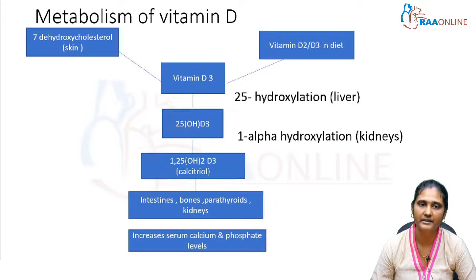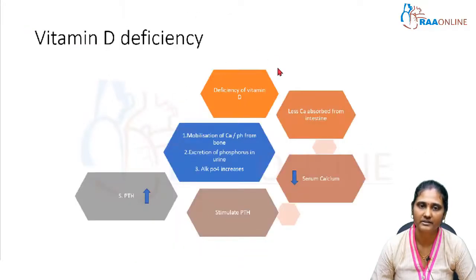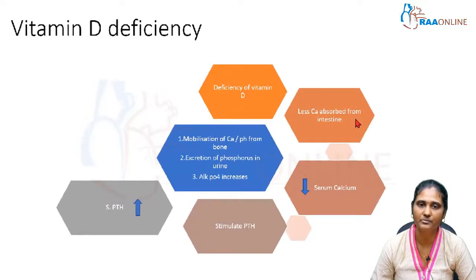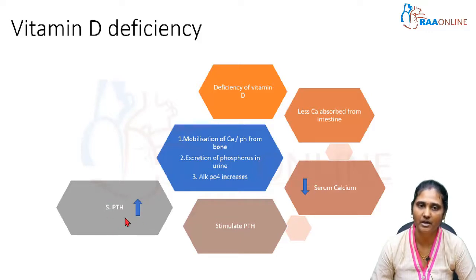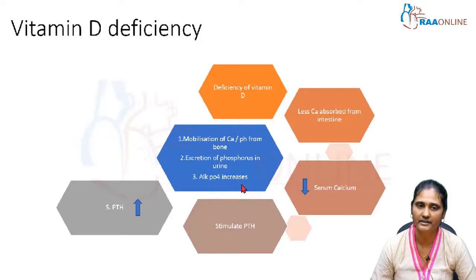When there is vitamin D deficiency, less calcium is absorbed from the intestine, so serum calcium levels decrease. The decrease in serum calcium stimulates the parathyroid gland to produce more parathyroid hormone. Parathyroid hormone mobilizes calcium and phosphorus from the bone, leading to more calcium-phosphorus mobilization, excretion of phosphorus in urine, and increased serum alkaline phosphatase enzyme activity. These three are the major biochemical changes in vitamin D deficiency.